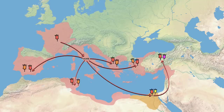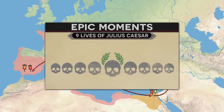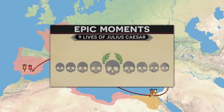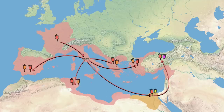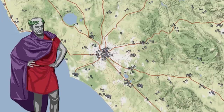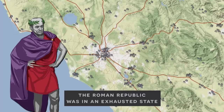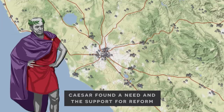For more coverage of this conflict, I highly recommend you check out our video on the Nine Lives of Julius Caesar. In any case, by 45 BC, Julius Caesar had finally defeated the last of his opponents in Spain and returned to Rome as its undisputed master, where he was declared dictator for life. The state of the Republic at the time was one of exhaustion from decades of destruction wrought by corruption and civil war. Thus, Caesar both found a need and the popular support to set about establishing a new status quo.